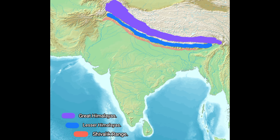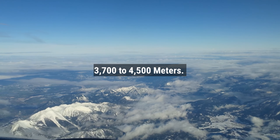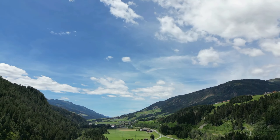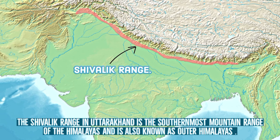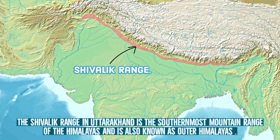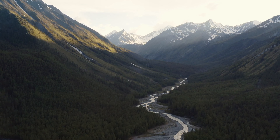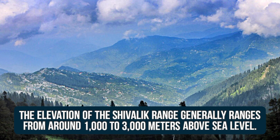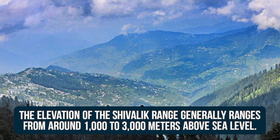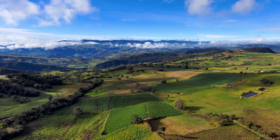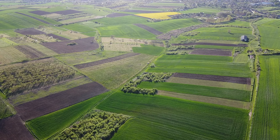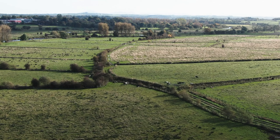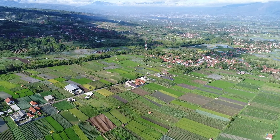To the south of the Greater Himalayas lies the Lesser Himalayan region, with elevations ranging from 3,700 to 4,500 meters — it is simply the part of the Himalayas with lower elevation. Adjacent to the Lesser Himalayas lies the Shivalik range, the southernmost mountain range of the Himalayas, also known as the Outer Himalayas. This range consists of low hills and foothills and serves as a natural boundary between the Himalayas and the Indo-Gangetic plains, with elevations generally ranging from around 1,000 to 3,000 meters above sea level. The next region is the Terai-Bhabar region, a fertile agricultural plain. The Bhabar area is a rocky area characterized by porous soil making it less fertile, while the Terai is the low-lying area with fertile plains.